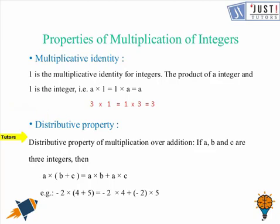Let's come to distributive property. Distributive property of multiplication over addition: If a, b and c are three integers, then a times (b + c) equals a times b plus a times c. For example, minus 2 times (4 + 5) equals minus 2 times 4 plus minus 2 times 5. So in both the cases, the answer is going to be the same.